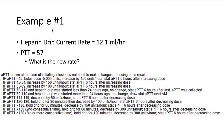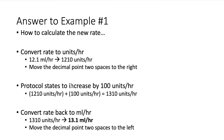Example one: we have a heparin drip running at 12.1 mls per hour and the PTT is 57. What is the new rate? We know we have to follow these directions because the PTT is between 55 and 69, so we have to increase the rate by 100 units per hour. The first thing we need to do is convert the rate to units per hour. The current rate is 12.1 mls per hour.